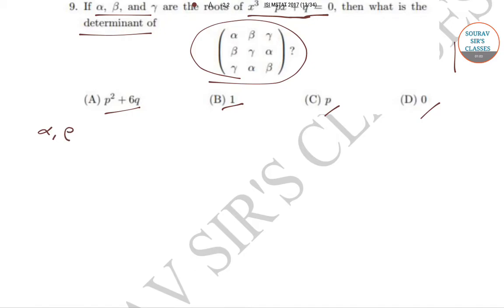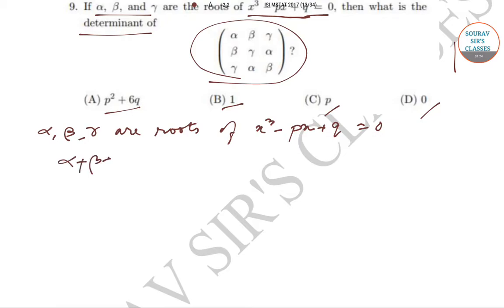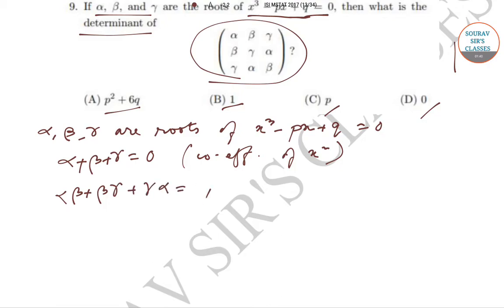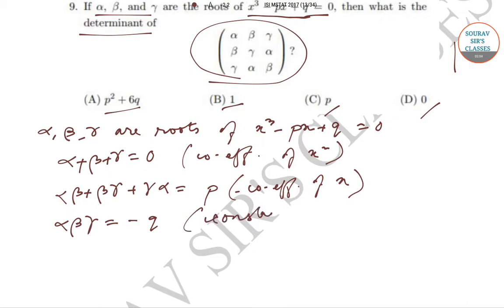It has been given that alpha, beta, and gamma are roots of the equation x³ minus px plus q equals zero. By using the relationship between the roots and the coefficients of the polynomial, we get the following: alpha plus beta plus gamma equals zero (coefficient of x²); alpha·beta plus beta·gamma plus gamma·alpha equals p (negative of the coefficient of x); and alpha·beta·gamma equals minus q (from the constant term).